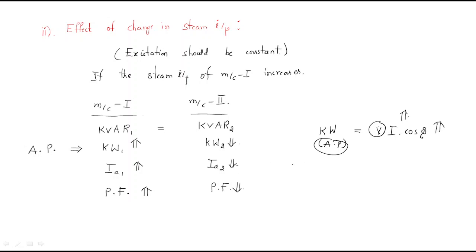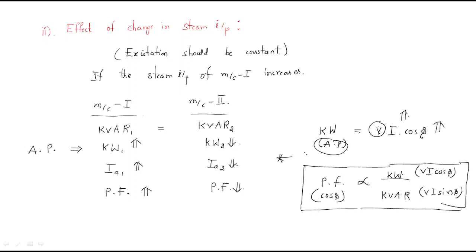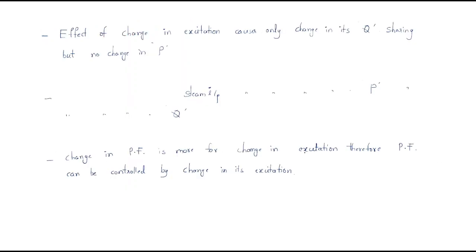Power factor, represented by cos φ, is proportional to active power kW and inversely proportional to reactive power. The active power is VI cos φ and reactive power is VI sin φ. The power factor equals VI cos φ divided by VI sin φ.